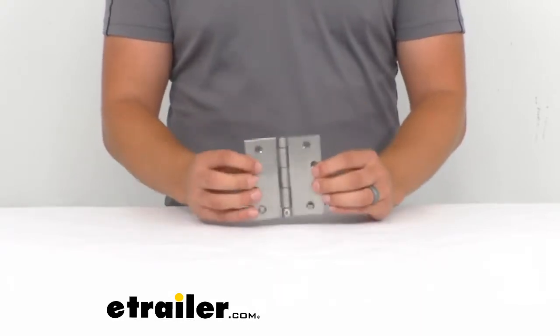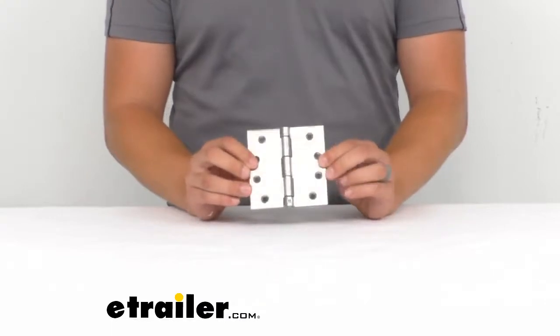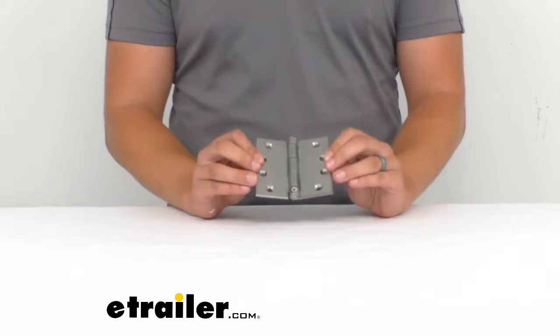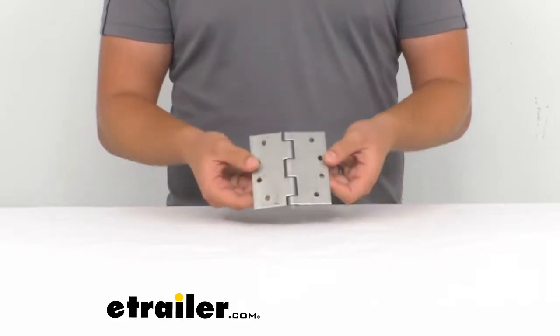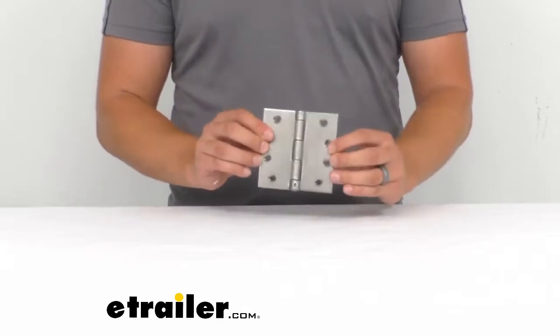It's going to have a 2B mill finish which gives the metal a slight shine. It's not a mirror finish where it's really reflective, but it's also not just bare dull metal. It does have a little bit of shine to it which helps it look a little bit nicer in my opinion.